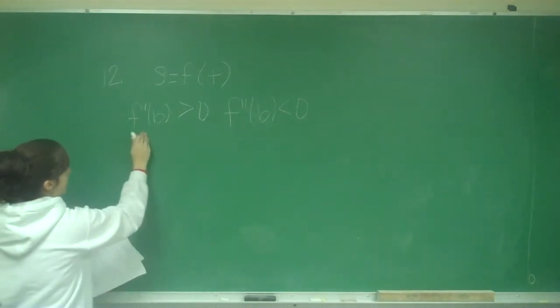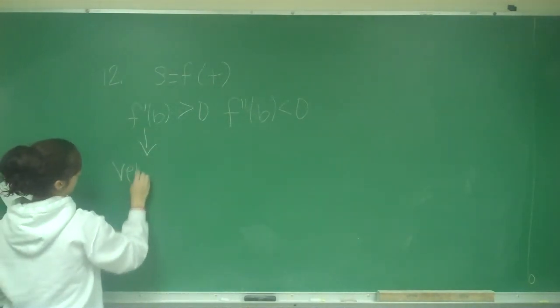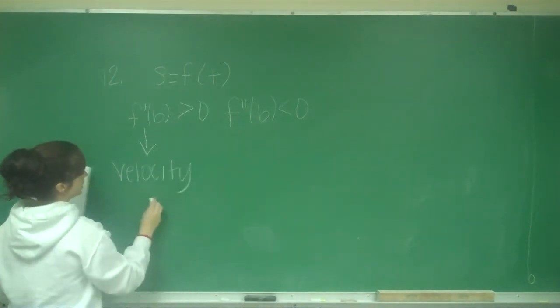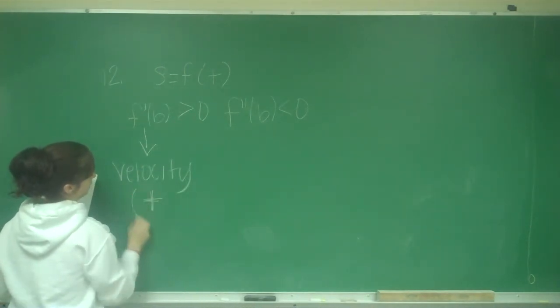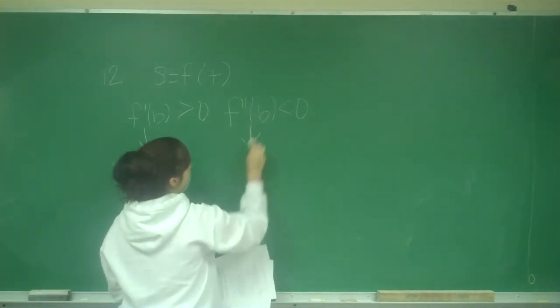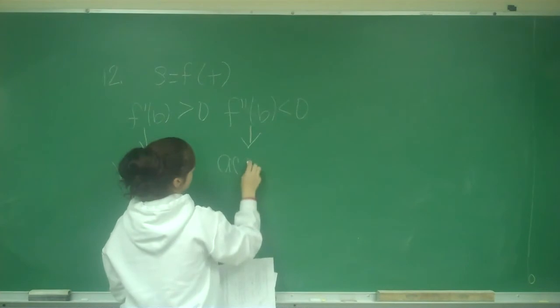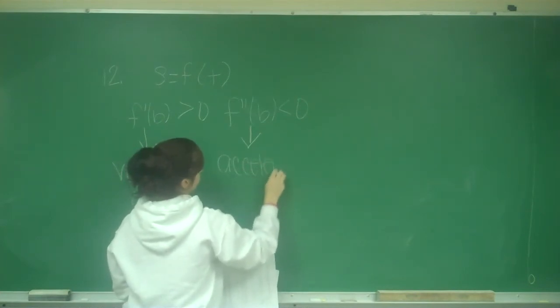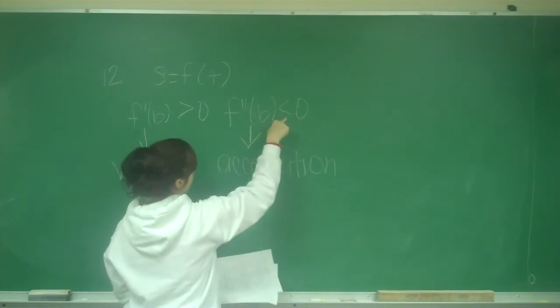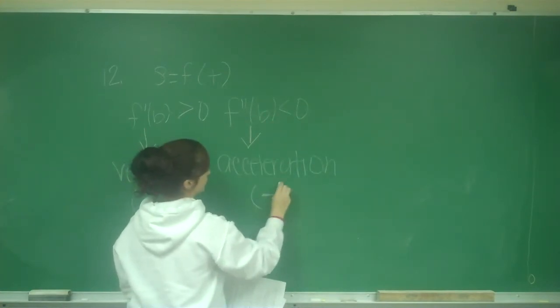So F prime of B is the same as our velocity. And if it's greater than 0, that means that it's positive. So we have a positive velocity. F double prime is our acceleration. And they say that that's less than 0, so that's a negative acceleration.